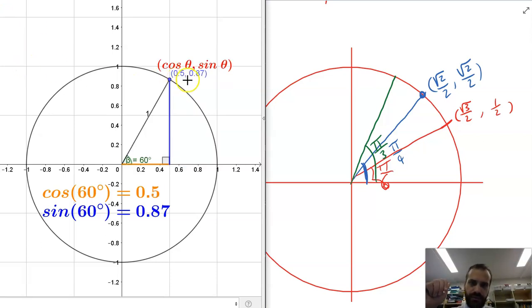So the coordinates of the dot at that point are 1/2 and √3/2.